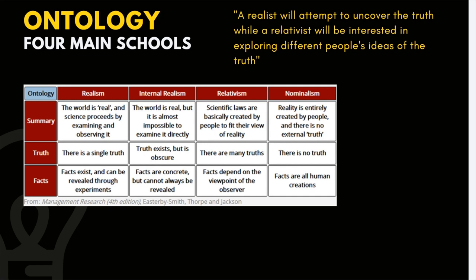Next on the spectrum is relativism. According to relativism, scientific laws are basically created by people to fit their view of reality. There are no real scientific laws — they are only there because people fit them based on how they perceive reality. For a relativist, there are many truths. Depending on the perspective, truth actually changes, so there are many versions of truth for a relativist. And in terms of facts, facts depend on the viewpoint of the observer.